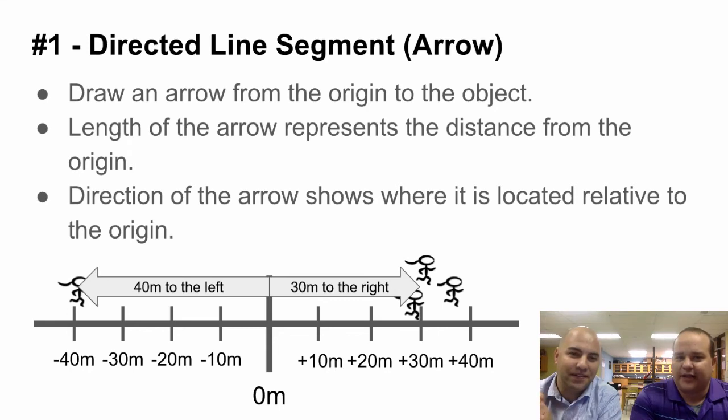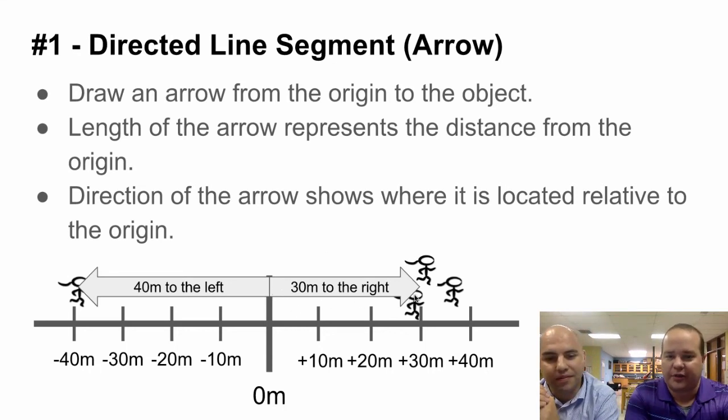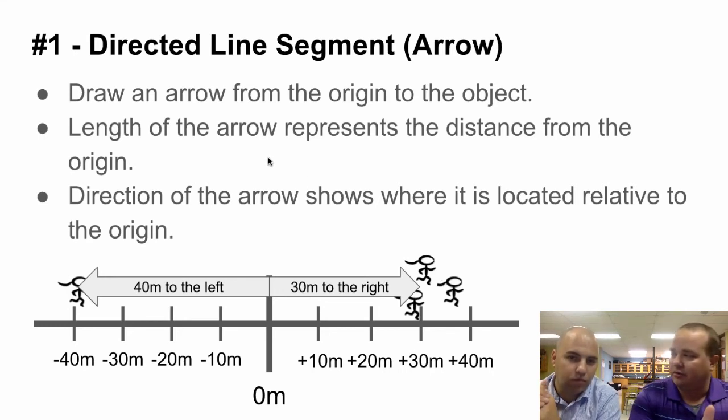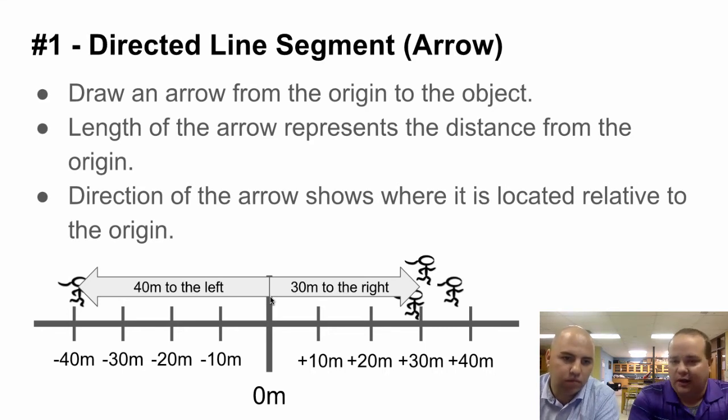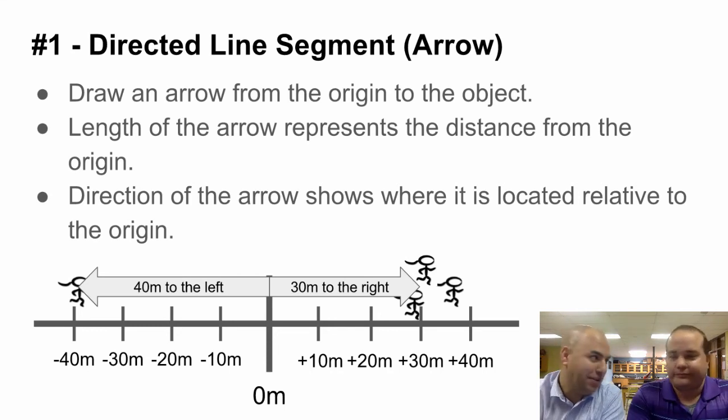So this first way is the directed line segment, which is really kids, just a fancy way of saying an arrow. So the first thing you want to do is you want to draw an arrow from the origin to the object. So as you can see down at the bottom down here, we have our origin is right here. So we're drawing an arrow in the direction where the kids who were where they were supposed to be. They started off, they went 30 meters to the right. So we already have drawn the length of the arrow to represent how far the good kids, we'll call them good kids because they were where they were supposed to be, and the distance from the origin to where they went. So the other part of the arrow is direction of the arrow shows where it is located to where the origin. So we always start at the origin and we draw an arrow towards where the object is. Thank you, Mr. Spencer, for filling in my brain fart. It happens sometimes. It does.